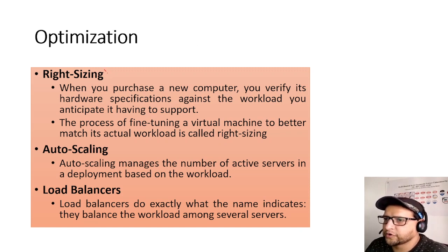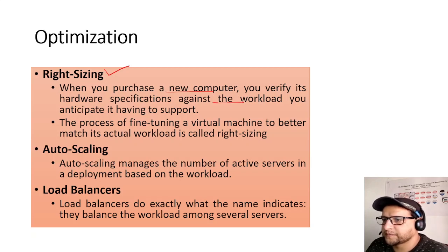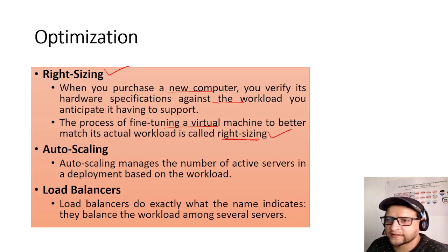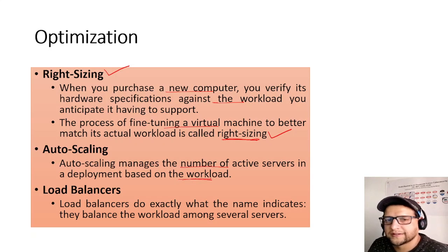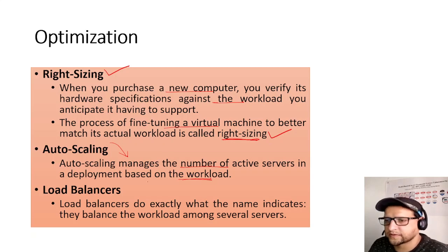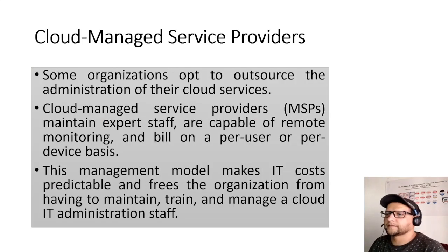Optimization: Right sizing is the process of fine-tuning a virtual machine to better match its actual workload — like verifying hardware specifications against the workload when purchasing a computer. In the cloud, it's important to choose the right size. Auto scaling manages the number of active servers based on workload — for example, add a server when CPU exceeds 80% and remove one when it drops below 30%. Load balancers balance the workload among several servers.